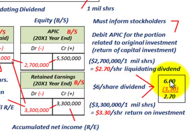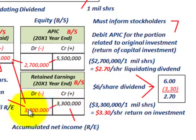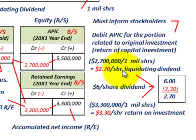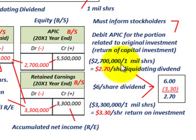The $6 per share dividend is divided up as follows. First, we reduce retained earnings — since we didn't have enough to cover the entire $6 million dividend, we closed out the $3,300,000 sitting on the books, which equals $3.30 per share as the return on investment. Subtracting that from the $6 per share leaves $2.70 per share as the liquidating dividend portion, representing the $2,700,000 reduction to additional paid-in capital. Dividing $2,700,000 by 1 million shares gives us $2.70 per share.